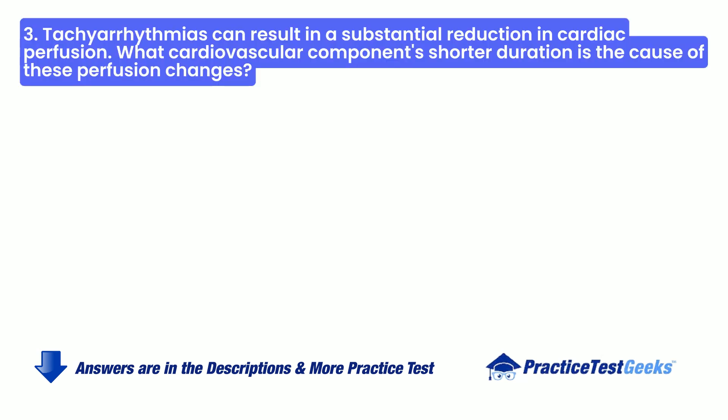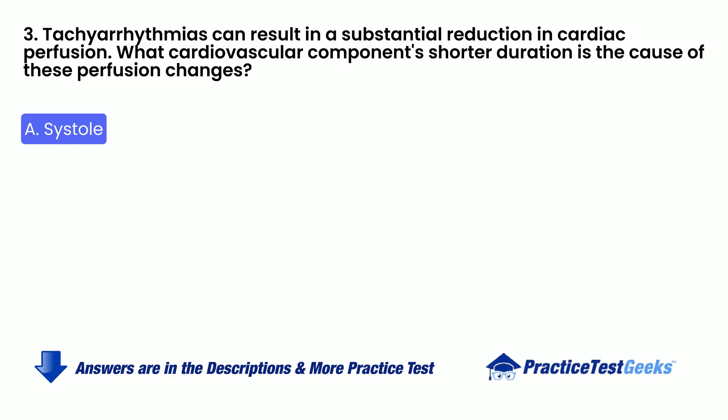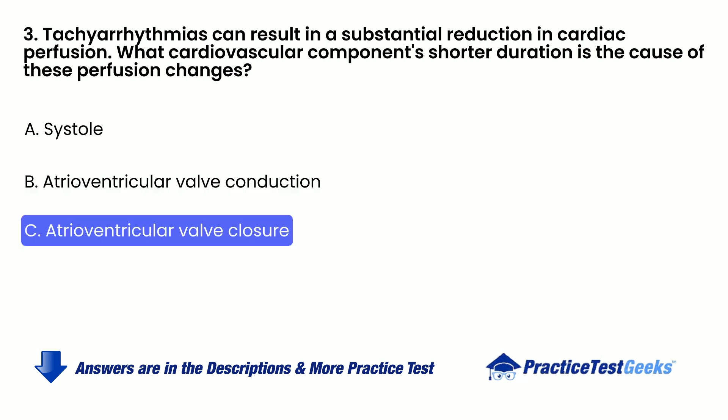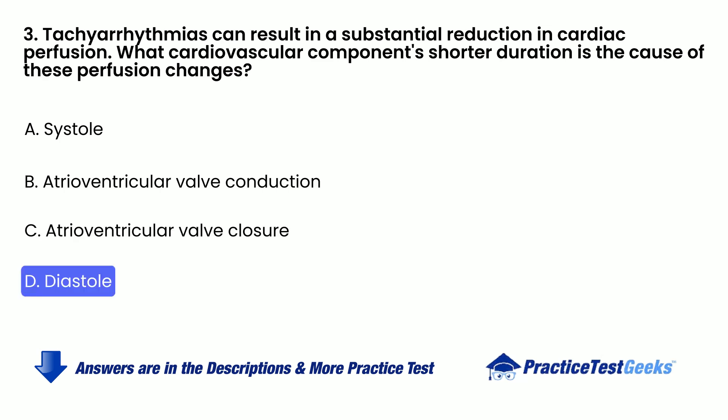Tachyarrhythmias can result in a substantial reduction in cardiac perfusion. What cardiovascular component's shorter duration is the cause of these perfusion changes? A. Systole. B. Atrioventricular Valve Conduction. C. Atrioventricular Valve Closure. D. Diastole.